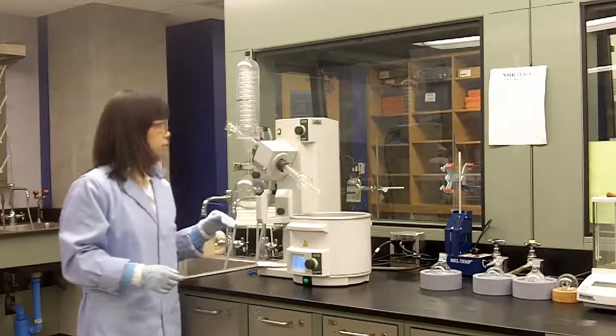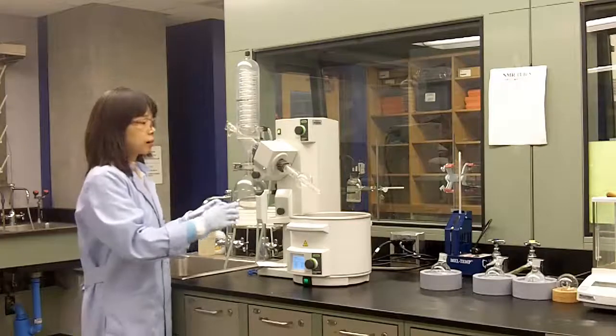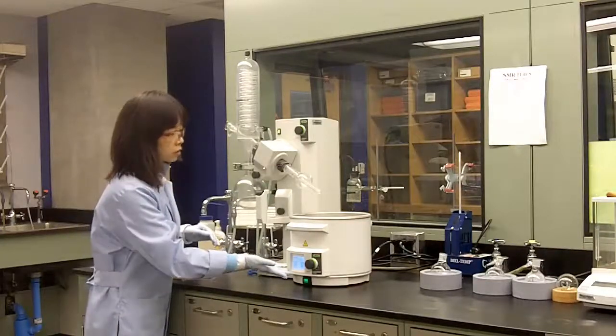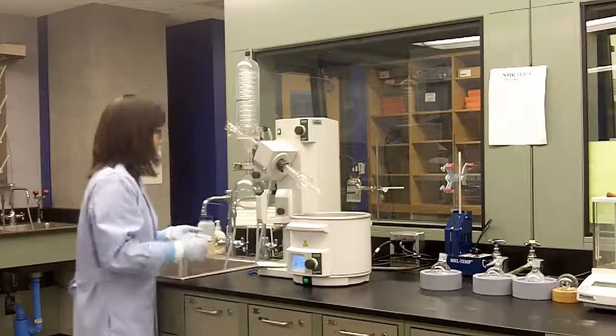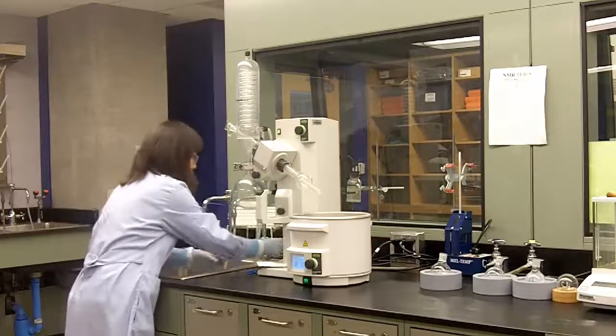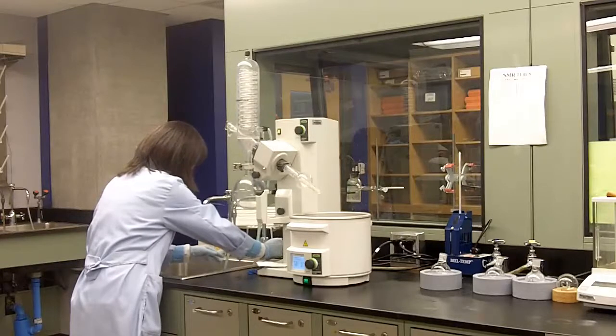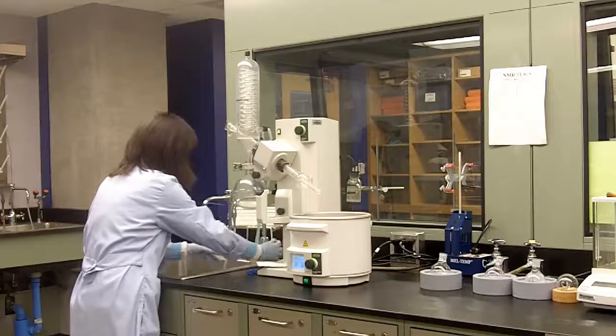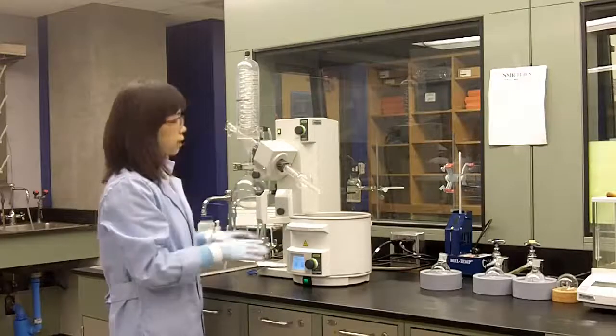Now let's talk about the steps to operate the rotary evaporator. Before you start evaporating any solvent, make sure your warm water bath is on. Typically the temperature is about 40 degrees. Also make sure the cooling water for the condenser is on. Okay, now we have the rotary evap ready.